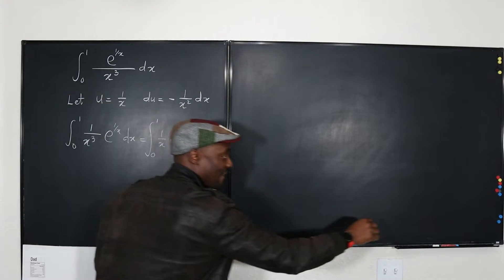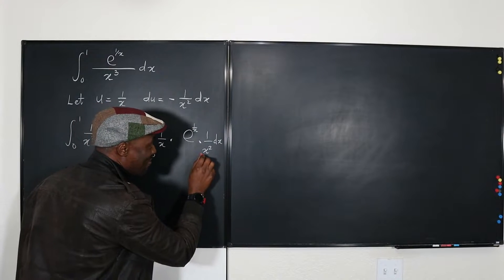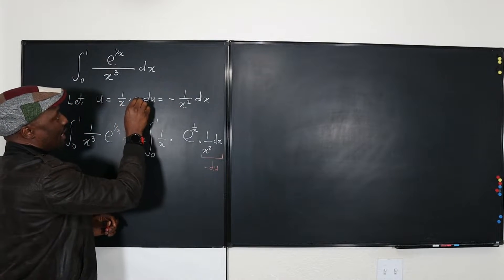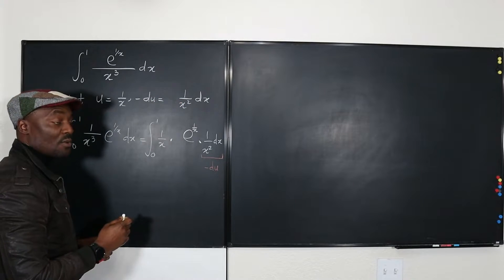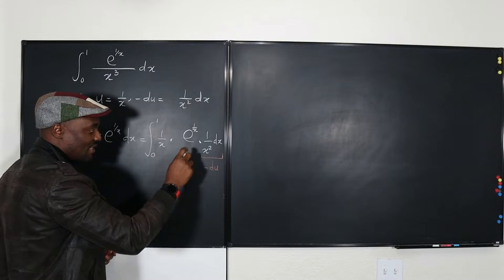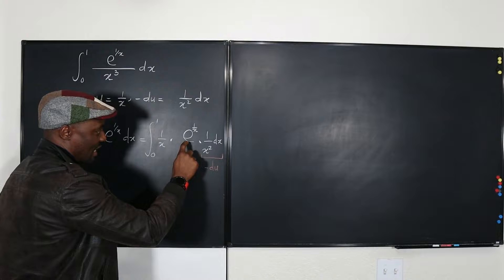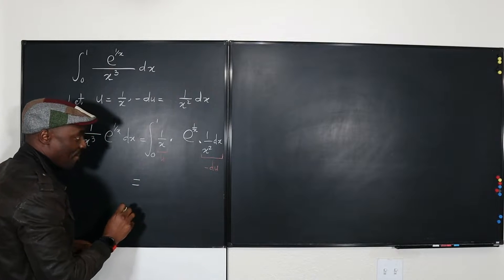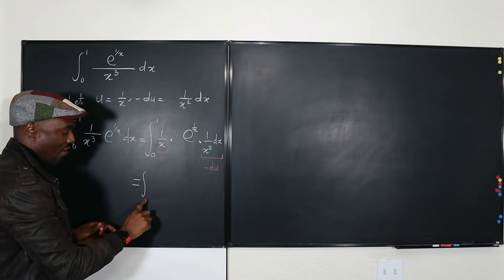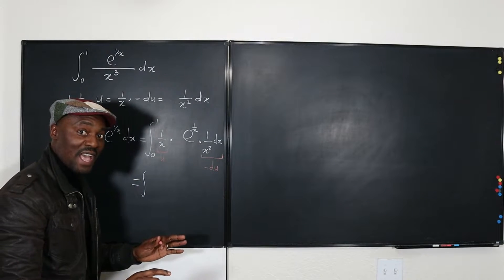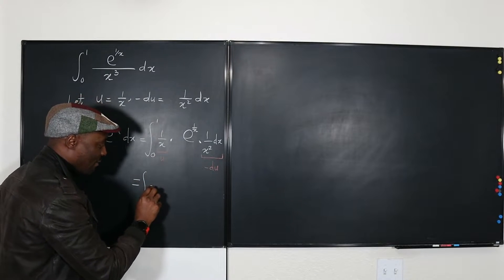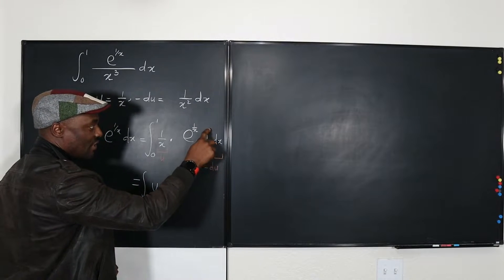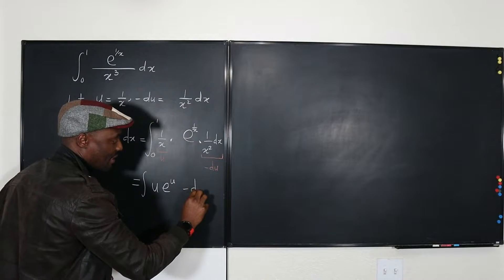I can replace 1 over x squared dx with negative du, because from our derivative: negative du equals 1 over x squared dx. So I replace that with negative du. The 1 over x stays as u, and e to the 1 over x becomes e to the u. Now I need to change the bounds since everything is now in terms of u, not x. I also need to change 1 over x squared dx to negative du, and then change these boundary values.